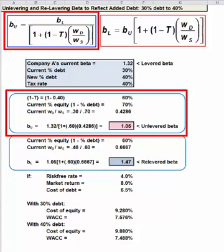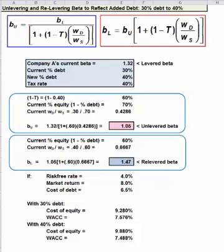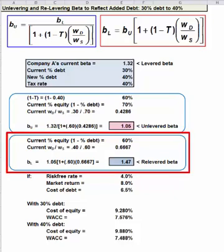Unlevering will decrease beta, so we'll be dividing. Using the data as in Example 1, we can get back to our unlevered beta of 1.05. Now we'll follow the same steps as in Example 1 to lever the 1.05 beta to incorporate 40% debt.